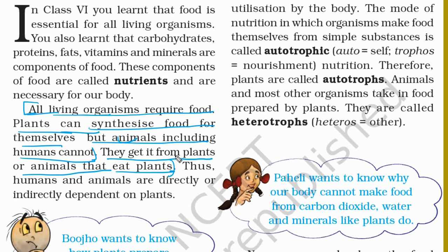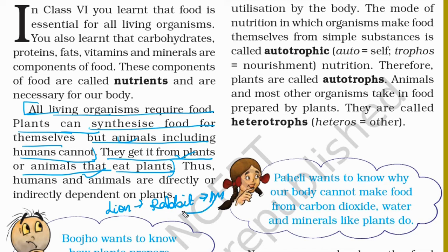Animals get food from plants, or from animals that eat plants. For example, a lion eats a rabbit, but the rabbit eats grass. If the rabbit is not eating grass, the rabbit is not alive, so what will the lion eat? This way, the lion is also directly or indirectly dependent on plants.